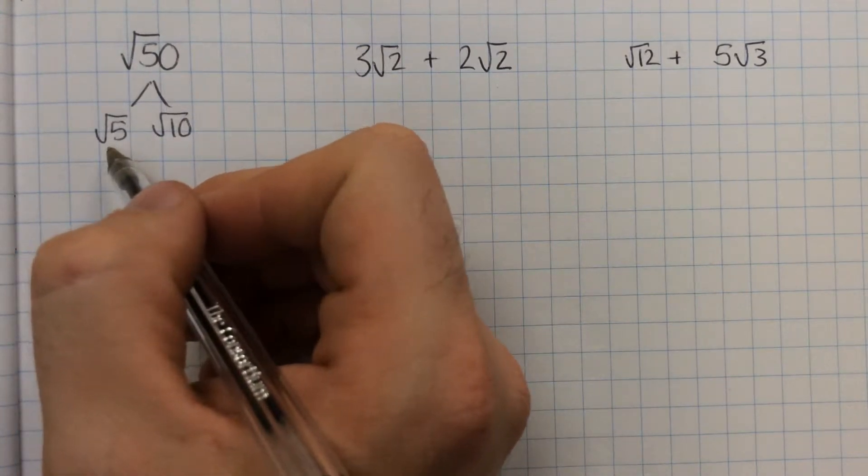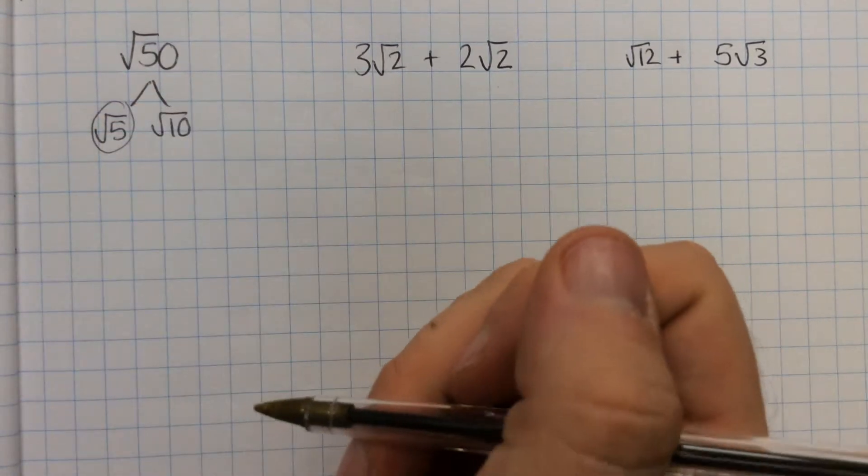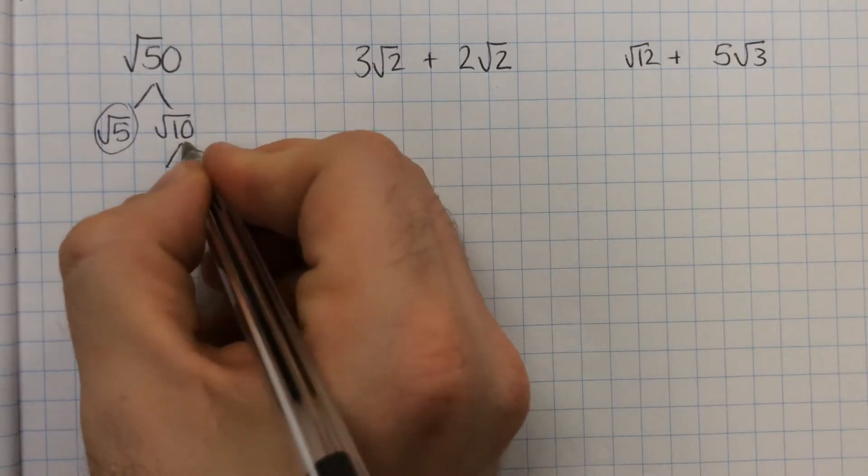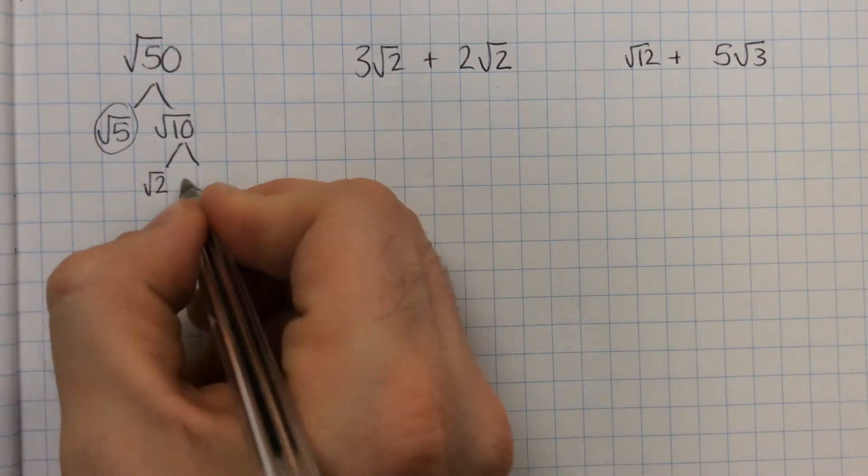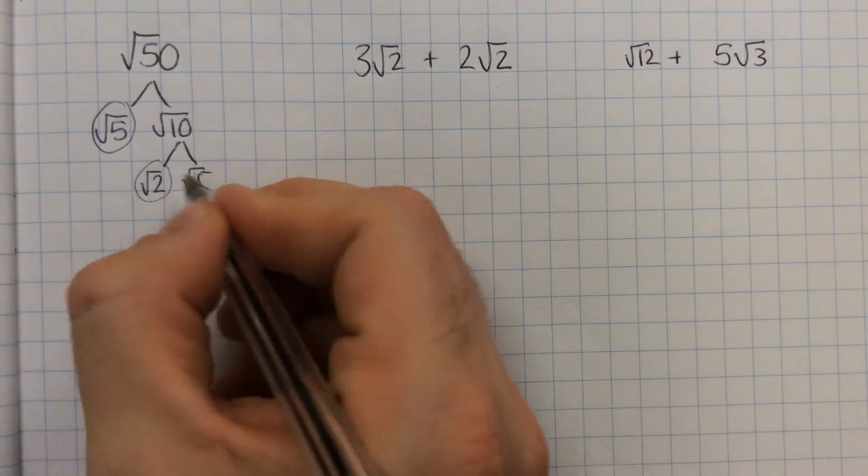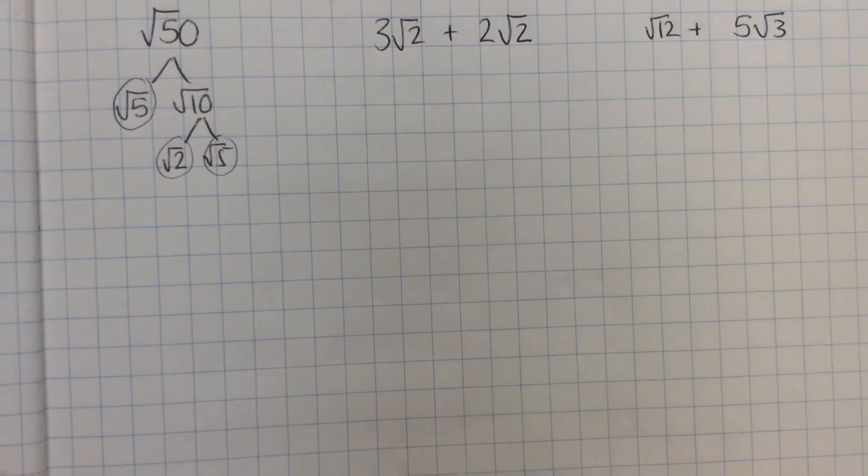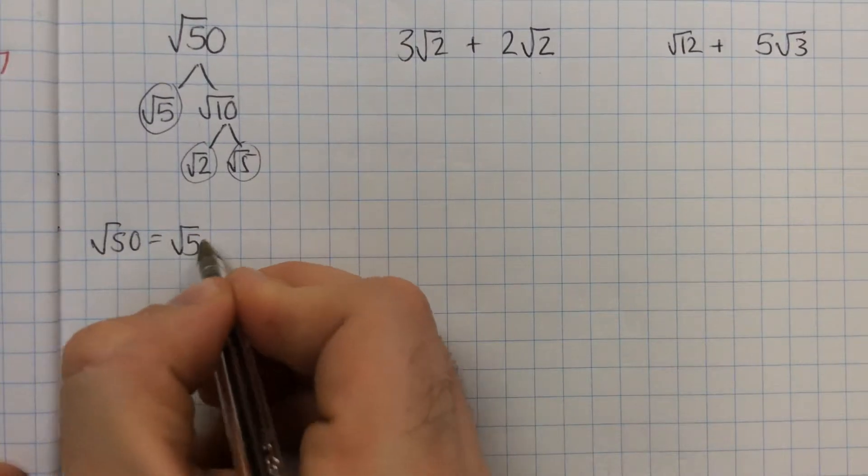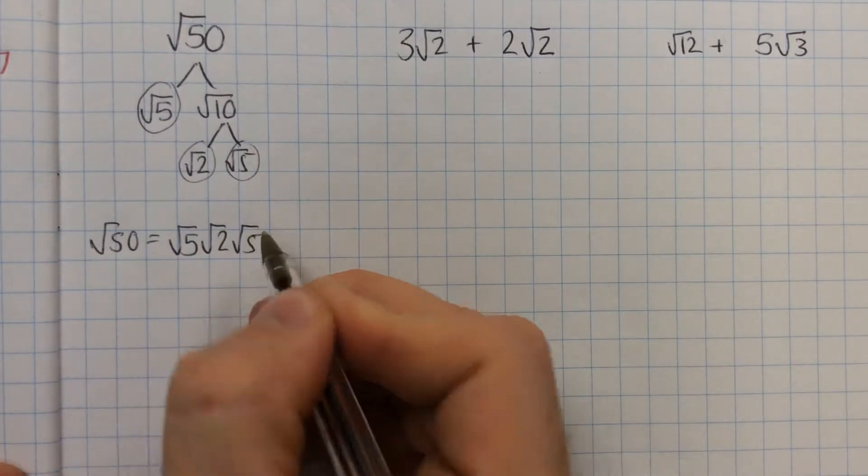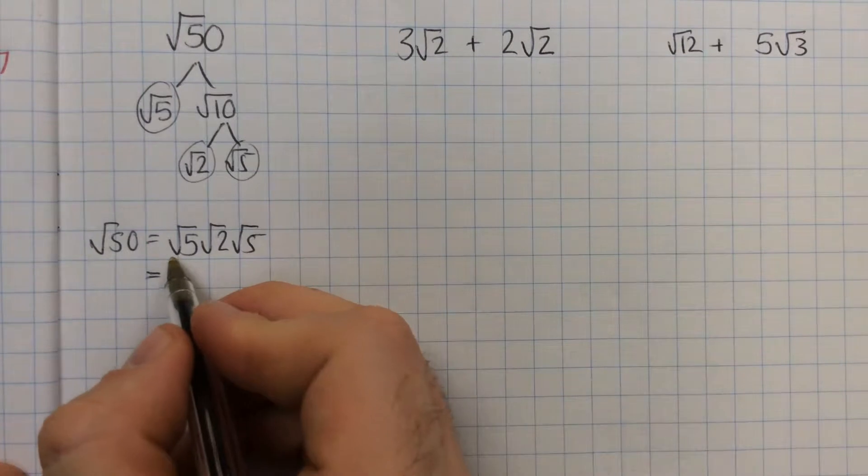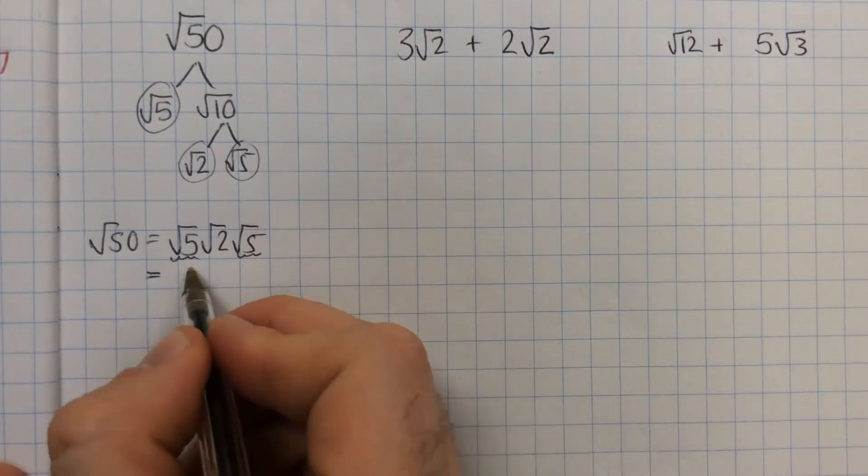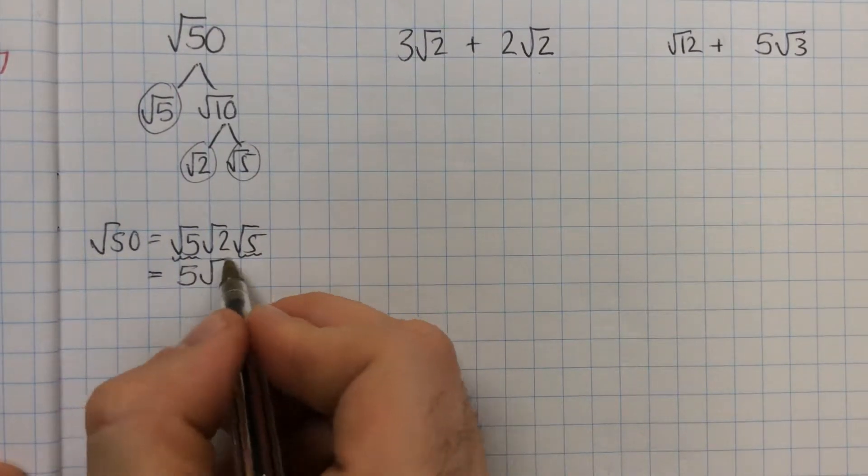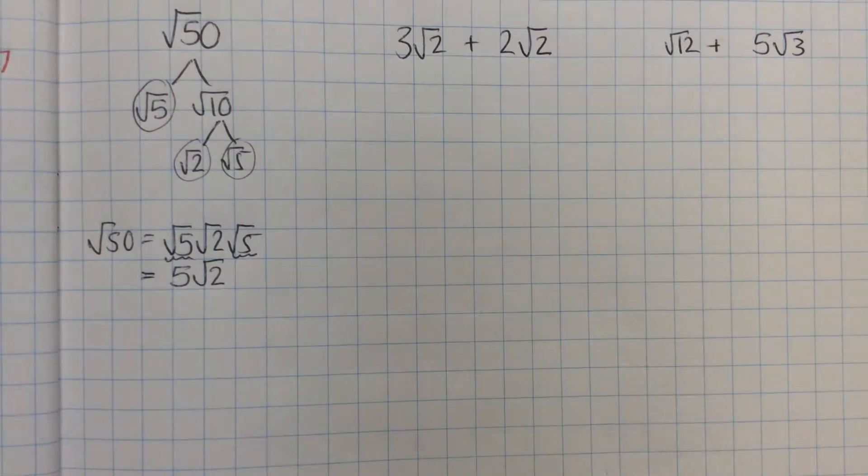If there's no two numbers that multiply, we circle it because root 5 is as far as we can go. Then we look at root 10, well that's root 2 times root 5, and again both of these are circled because neither of them divide any further. So underneath we can say that root 50 is made up of a root 5 times by a root 2 times by another root 5. Underneath we need to remember that root 5 times root 5 is just 5, and then times by root 2, and the answer is 5 root 2.